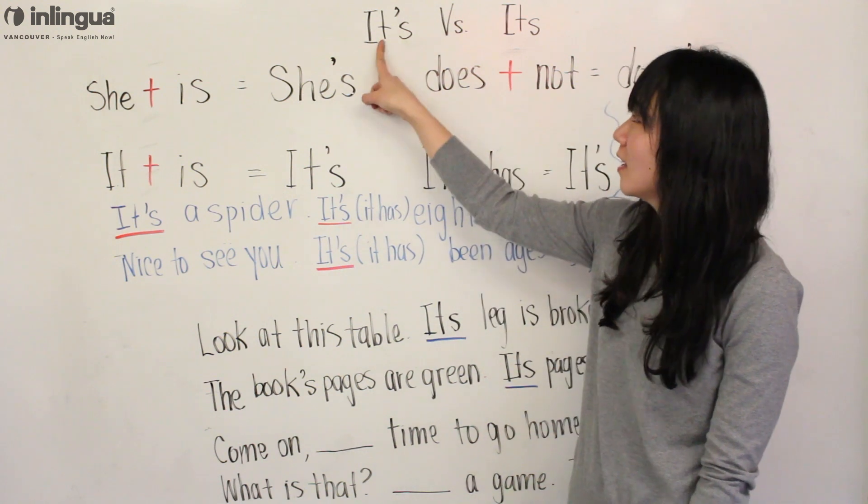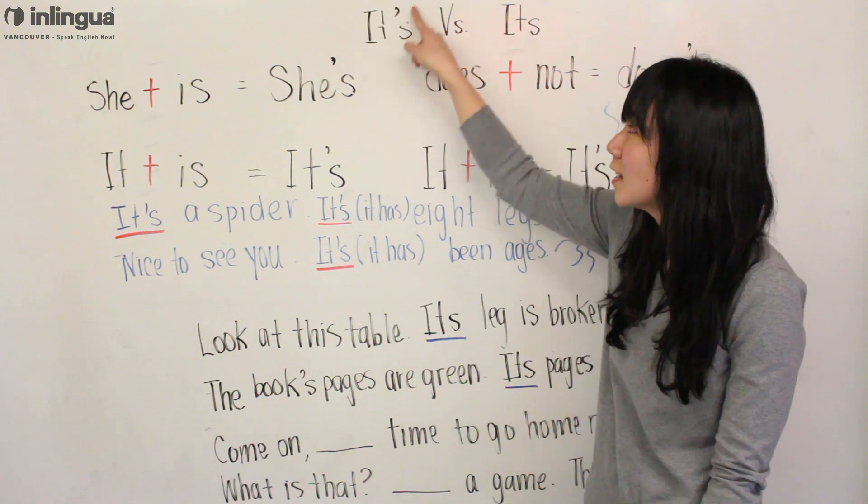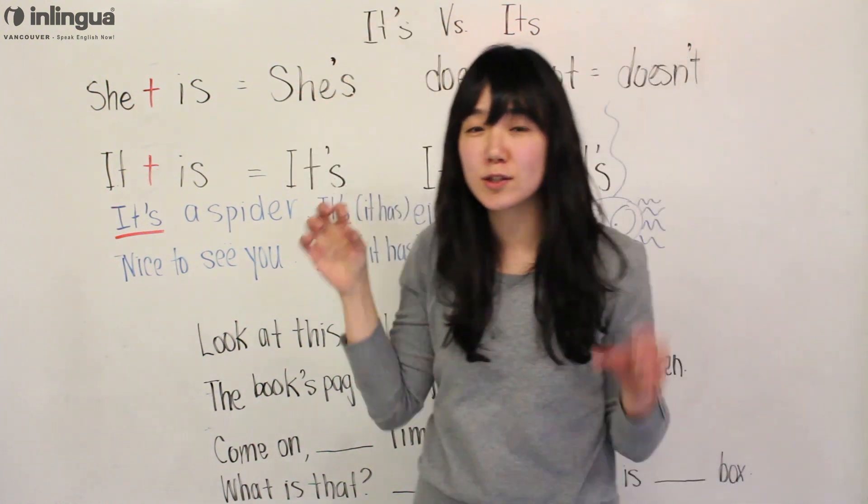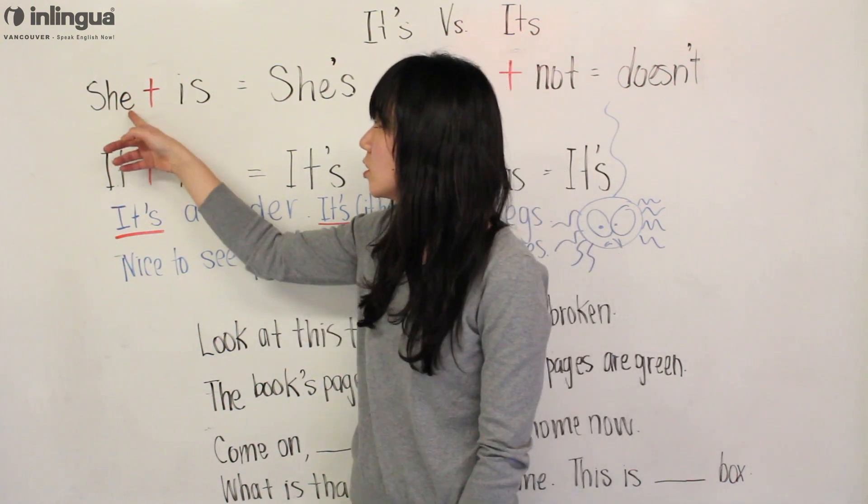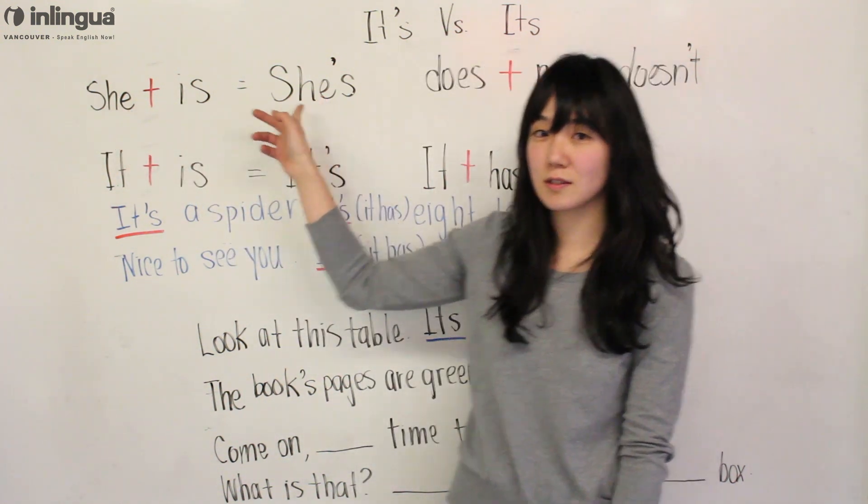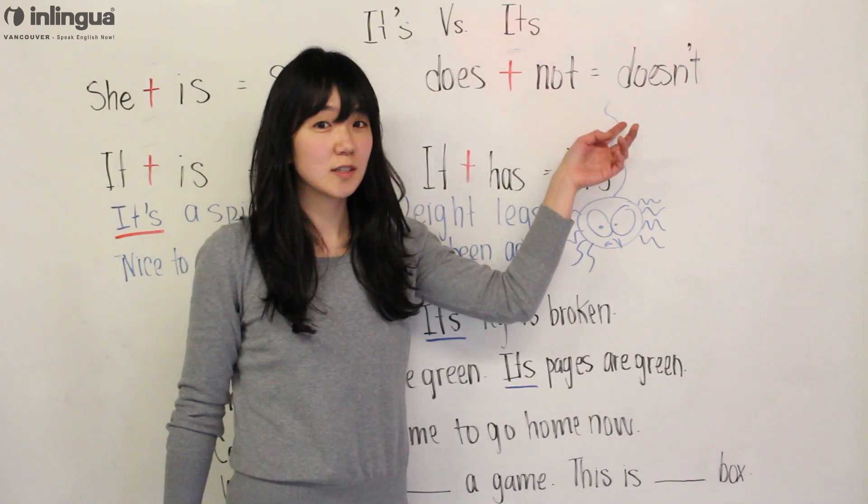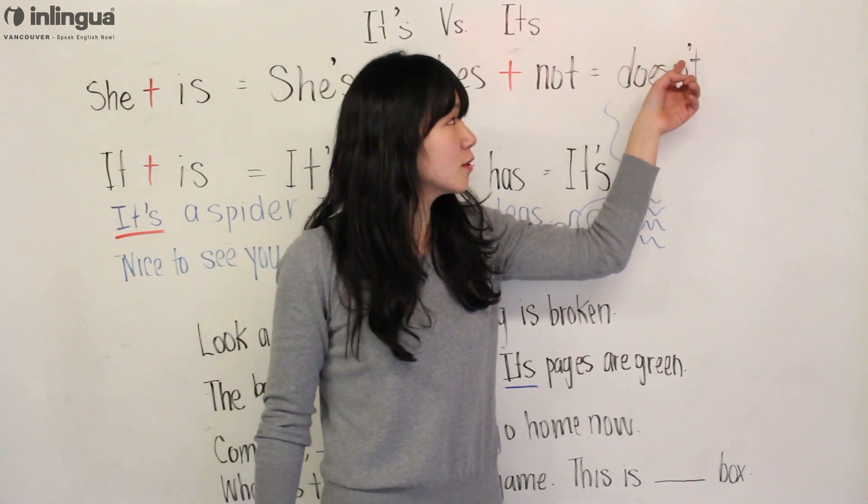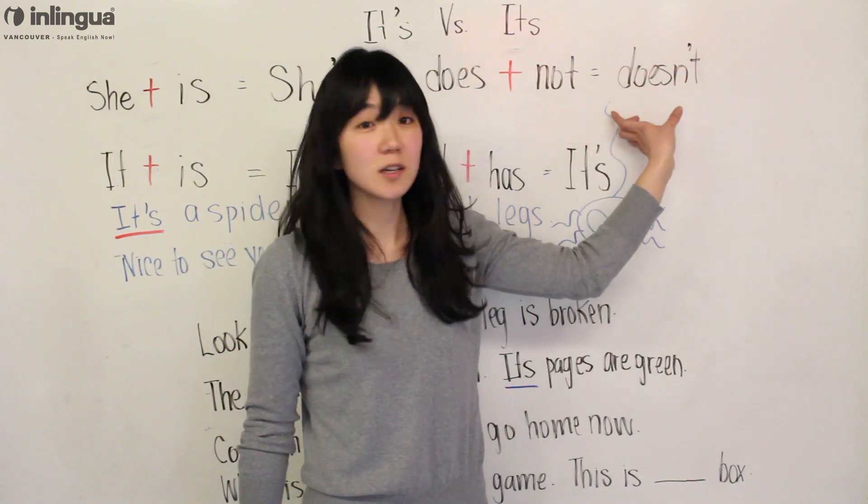So let's start with IT'S. This apostrophe means that it is two words put together, which is a contraction. For example, 'she' plus 'is' is 'she's'. 'Does' plus 'not' equals 'doesn't'. So the apostrophe replaces a letter that should be here to make a contraction.